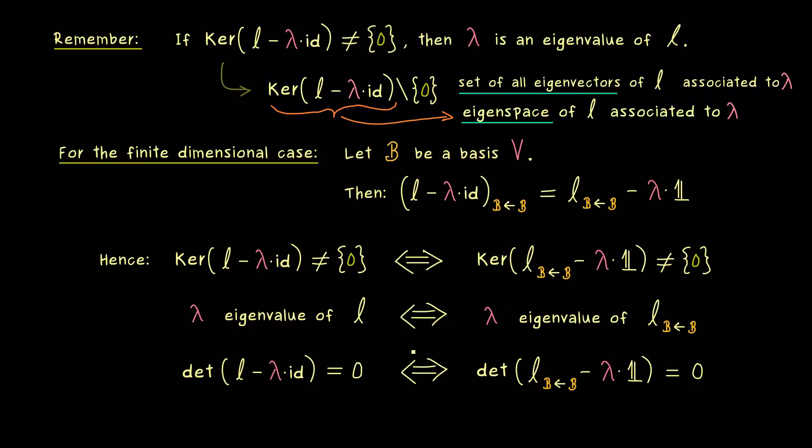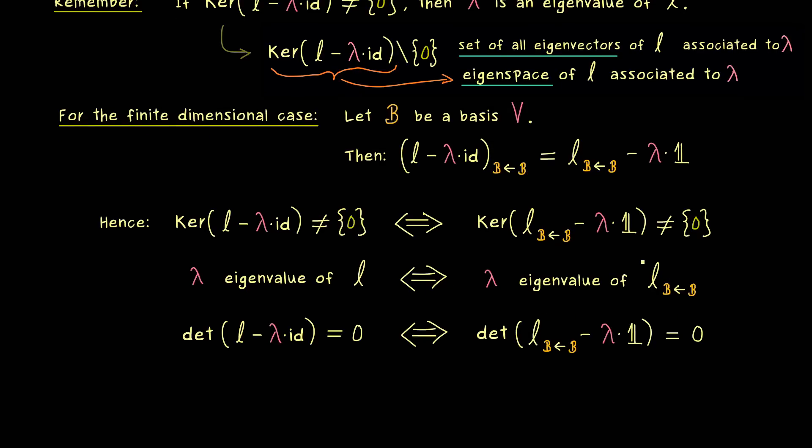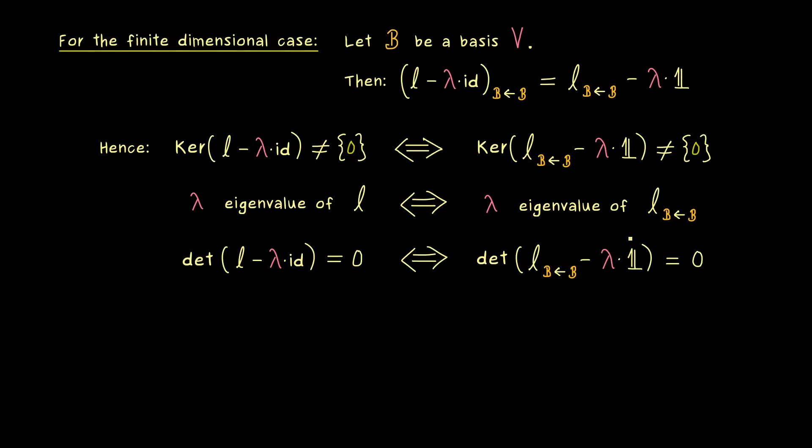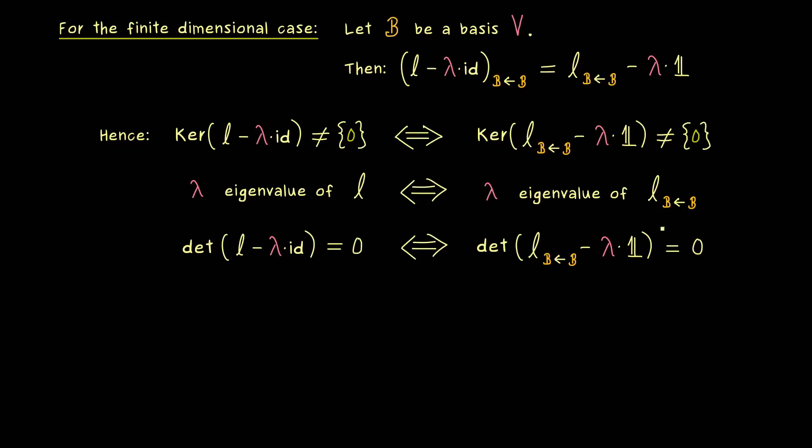However, you also see that for the common finite dimensional case you just have to know how to calculate eigenvalues for square matrices. Because then you can translate everything to the abstract case as well. For this reason the actual motivation for this abstract case comes from the infinite dimensional case.